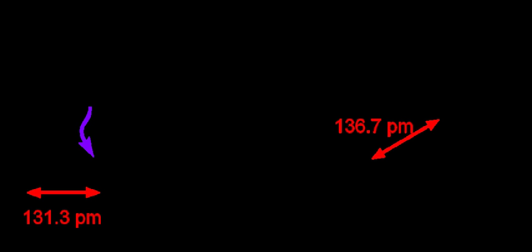Ionic bonding is a type of electrostatic interaction between atoms which have a large electronegativity difference. There is no precise value that distinguishes ionic from covalent bonding, but a difference of electronegativity of over 1.7 is likely to be ionic, and a difference of less than 1.7 is likely to be covalent. Ionic bonding leads to separate positive and negative ions, with ionic charges commonly between −3e to ±3e. Ionic bonding commonly occurs in metal salts such as sodium chloride. A typical feature of ionic bonds is that the species form into ionic crystals, in which no ion is specifically paired with any single other ion in a specific directional bond. Rather, each species of ion is surrounded by ions of the opposite charge, and the spacing between it and each of the oppositely charged ions near it is the same for all surrounding atoms of the same type.